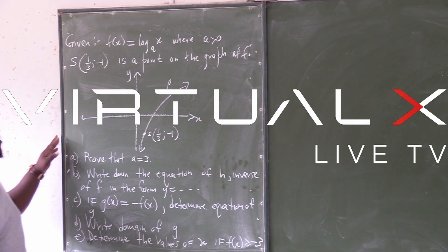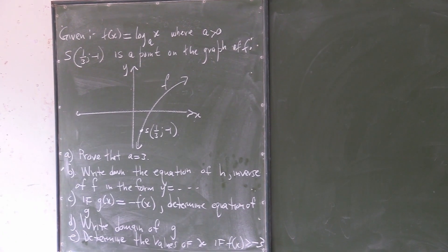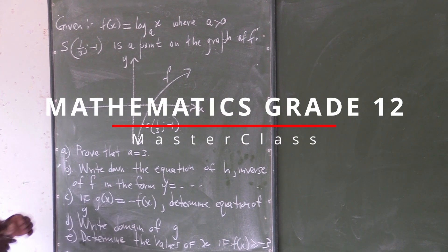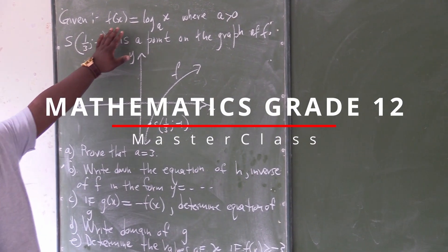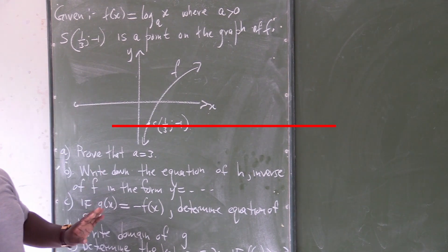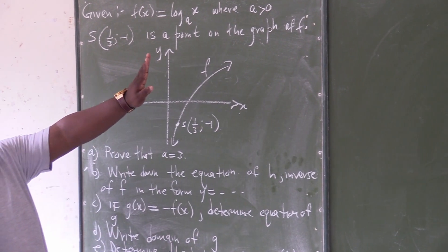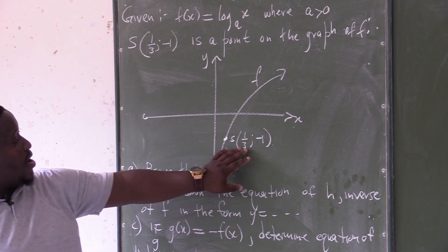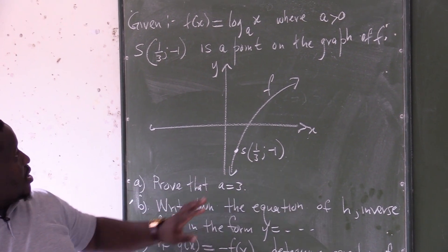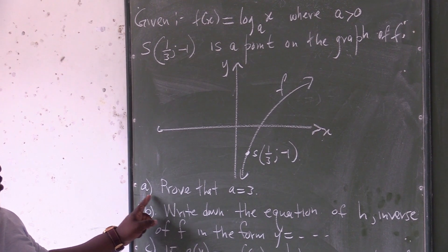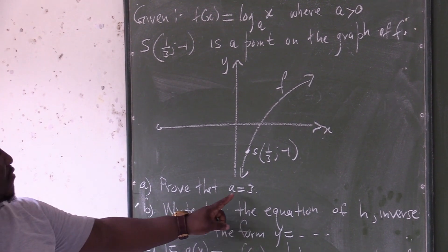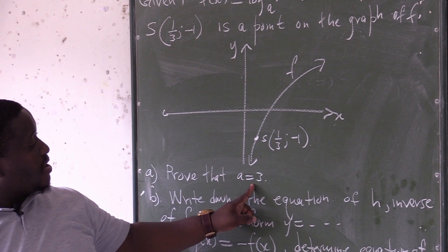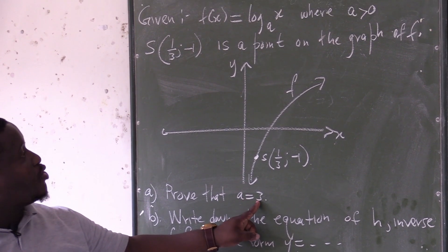This is another question from one of the past papers. We are given f of x, which is log base a of x, where a is greater than 0. The point (1/3, -1) is given. They say to prove that the value of a is equal to 3. So we must find the value of a, and we expect the value of a to be 3.